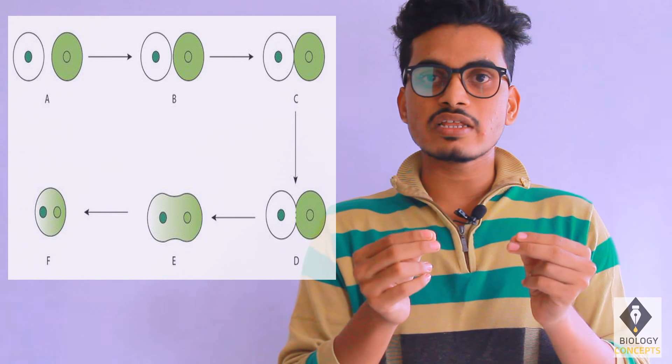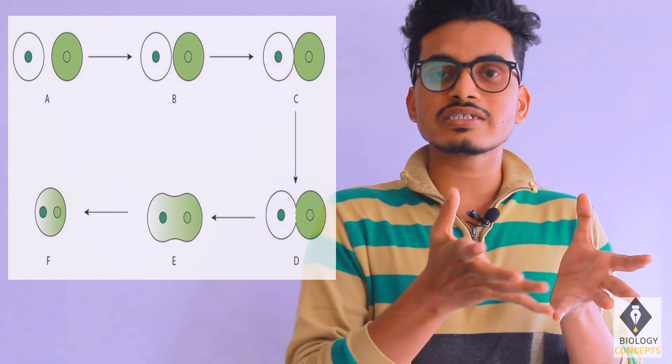Heterokaryosis is a situation of a cell. Basically, a cell contains two nuclei. These two nuclei are from different strains. Let us understand how it exists.